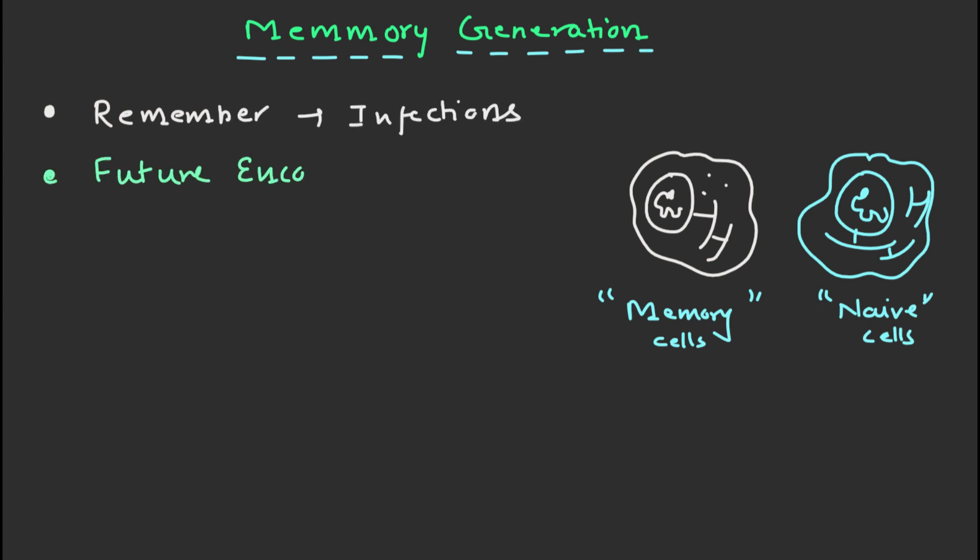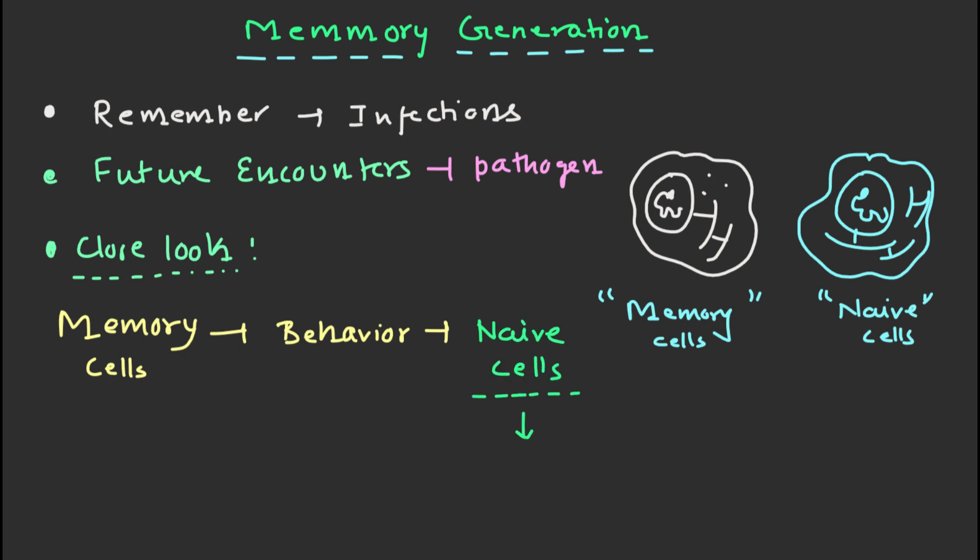Let's take a closer look at how memory cells work. Memory cells have a different phenotype and behavior than naive cells. Naive cells are B cells and T cells that have not yet encountered the pathogen. For example, memory B cells have a high affinity for the antigen, meaning they can bind to it more tightly and produce more antibodies.